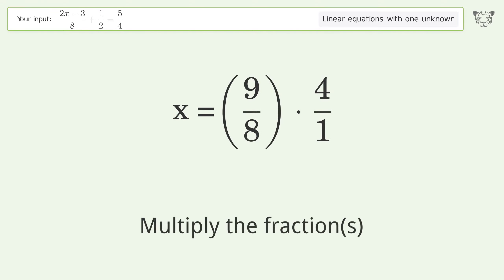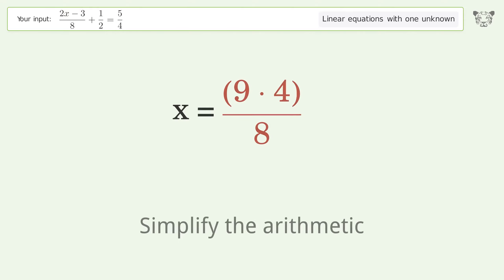Multiply the fractions. Simplify the arithmetic. And so the final result is x equals 9 over 2.